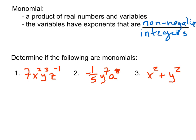Down below here let's determine if the following are monomials — we'll write yes or no and then say why or why not. This first one we have 7x squared y to the third z to the negative one. We have all multiplication which is good. But we see that this is not going to be a monomial because we cannot have negative exponents on those variables.